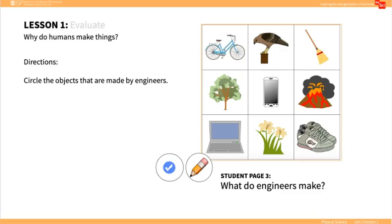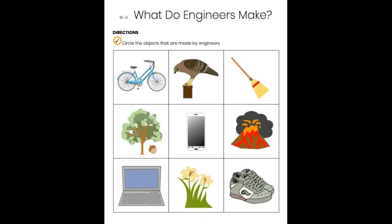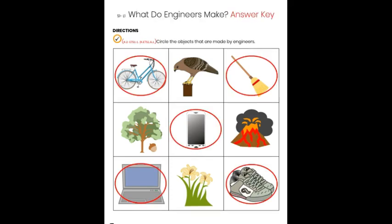In the Evaluate, pass out copies of Student Journal page 3, What Do Engineers Make, shown here. Have the students complete and discuss how each form of technology helps or is useful to humans. An answer key is provided here on Teacher Page 2.